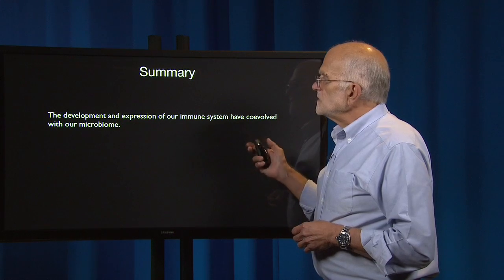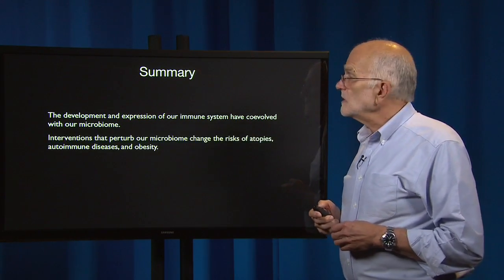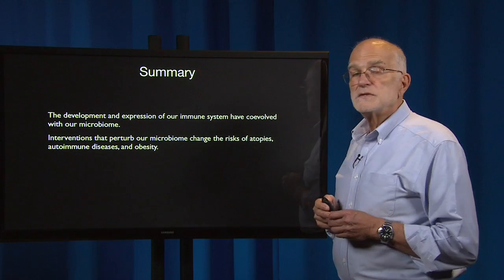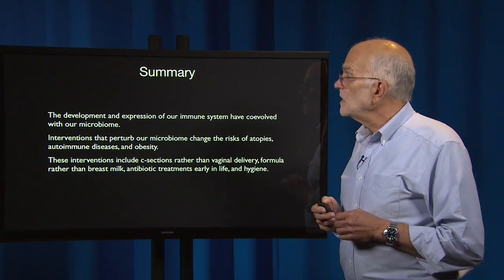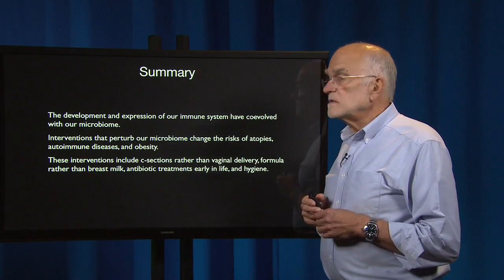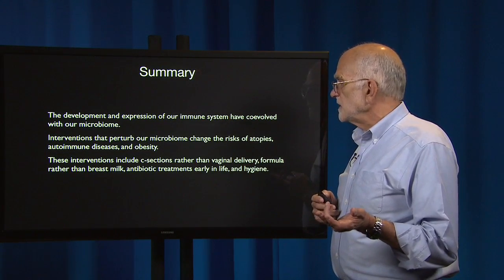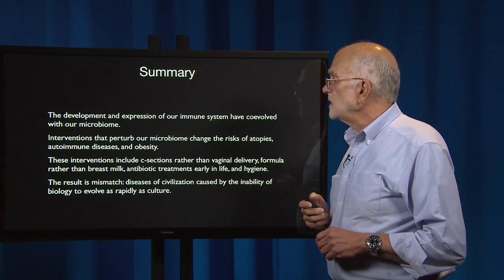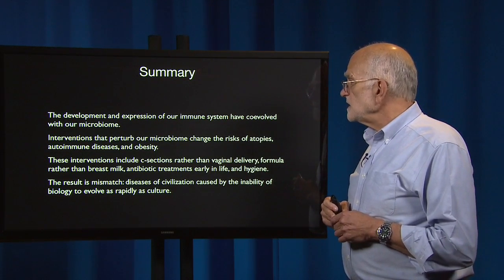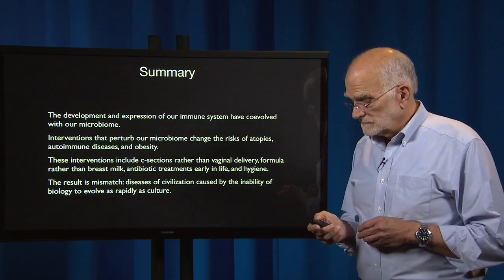To summarize: the development and expression of our immune system have co-evolved with our microbiome. Interventions that perturb our microbiome change the risk of atopies, autoimmune diseases, and obesity. These interventions include C-sections rather than vaginal delivery, formula rather than breast milk, antibiotic treatments early in life, and hygiene in general. The result is mismatch — diseases of civilization caused by the inability of biology to evolve as rapidly as culture.